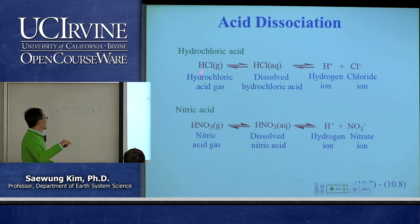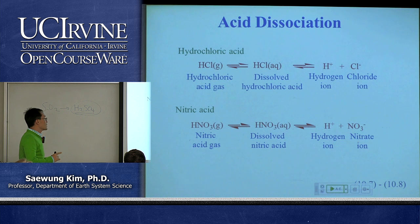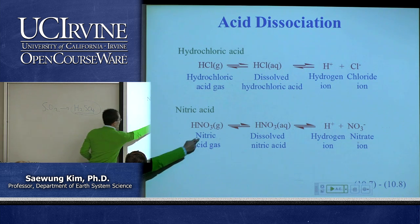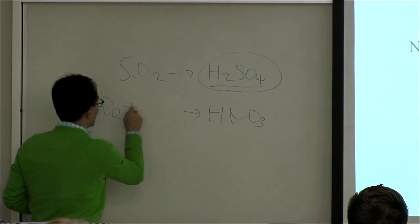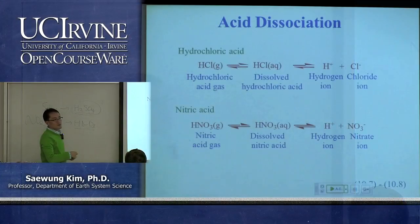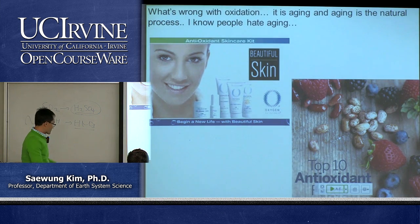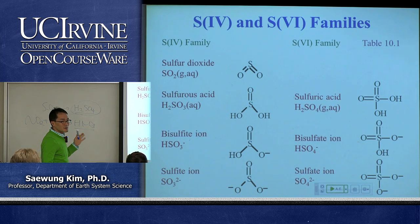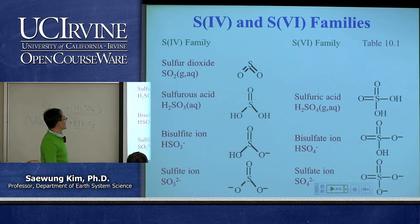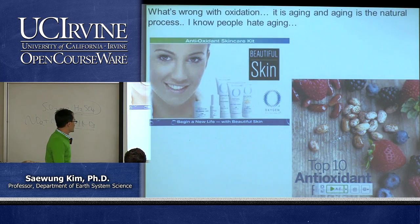HCl was a big problem during the Leblanc process era but is no longer in use. Nitric acid from NO₂ can also be a precursor for acid rain. The key process is oxidation: SO₂ gains oxygen to become H₂SO₄, and NO₂ gains oxygen to become HNO₃. Air pollutants in the atmosphere get oxidized — aging, like antioxidants slowing human aging — become water soluble, and are removed from the atmosphere by rain.